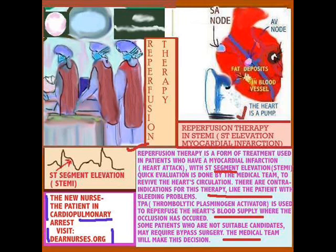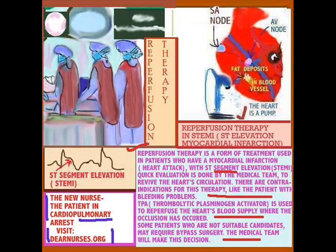The first thing I wanted to talk about is reperfusion therapy. It is a form of treatment used for myocardial infarction. There are certain ST segment changes that validate its use, and there are some contraindications. Patients who generally have bleeding disorders are not suitable candidates. TPA, thrombolytic plasminogen activator, is what is used to reperfuse the heart. It's extremely effective, but it's not a cure-all — some patients are just not suitable candidates, especially if they have bleeding disorders.